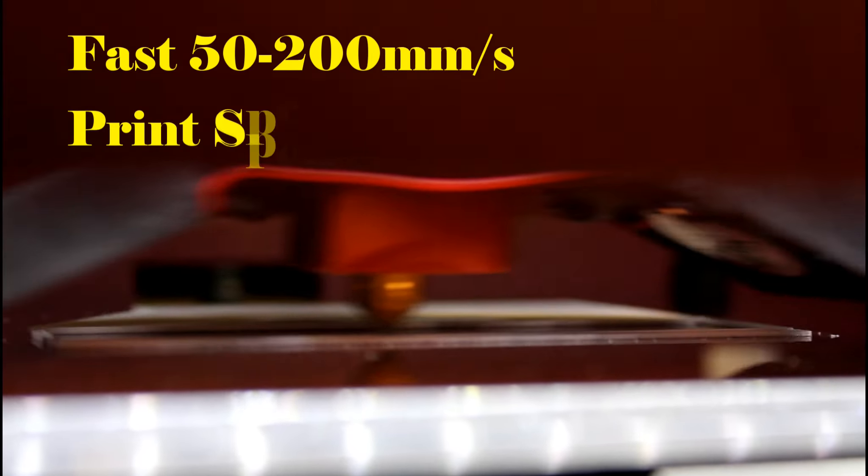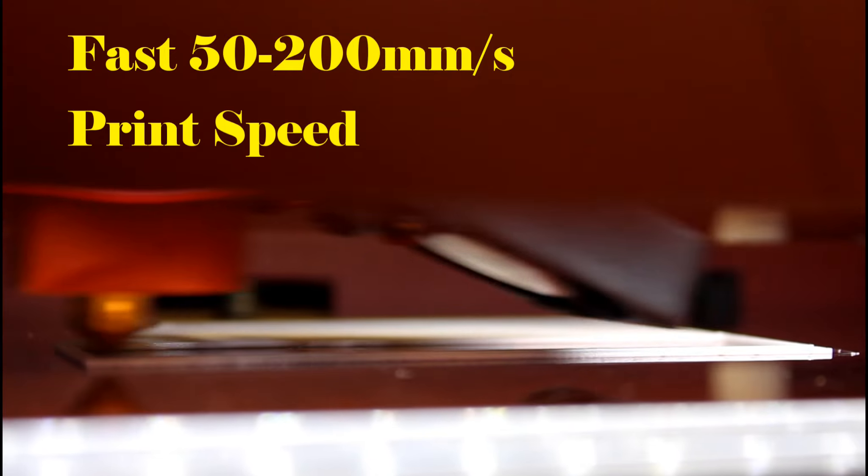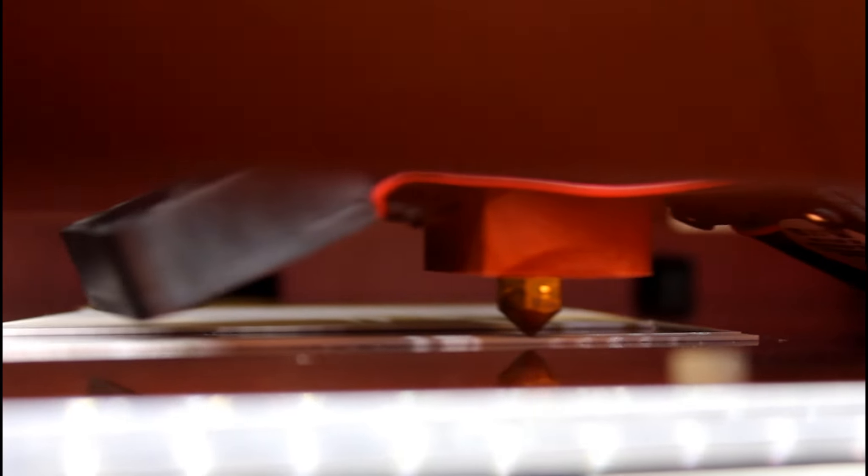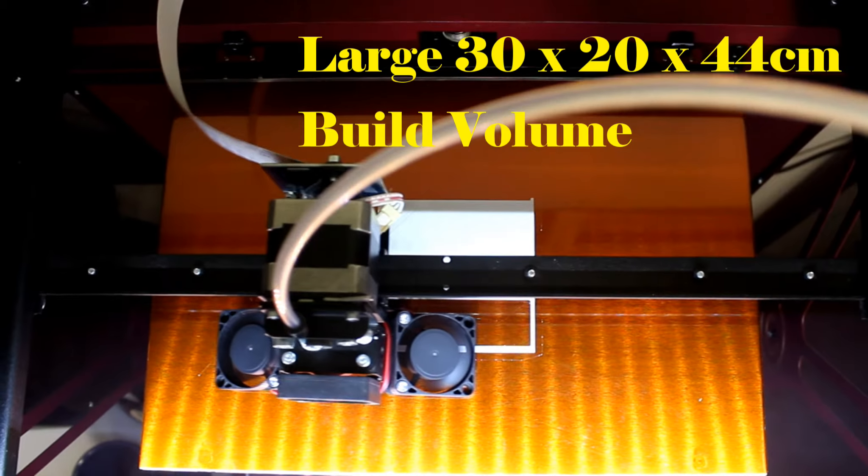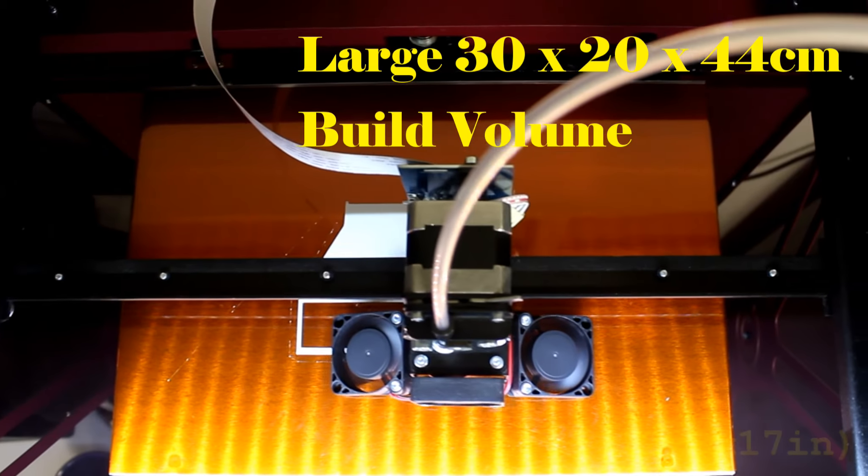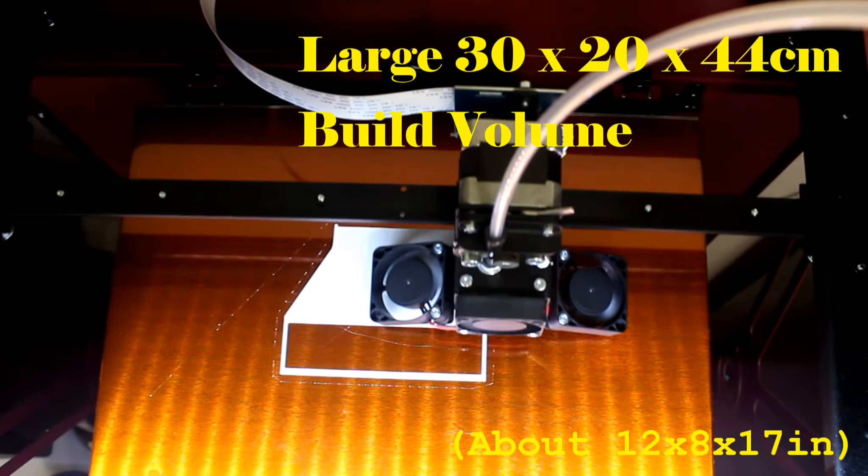The CraftBot XL features a high speed 50-200mm per second print speed and a large 30 x 20 x 44 cm build volume, or approximately 12 x 8 x 17 inches.